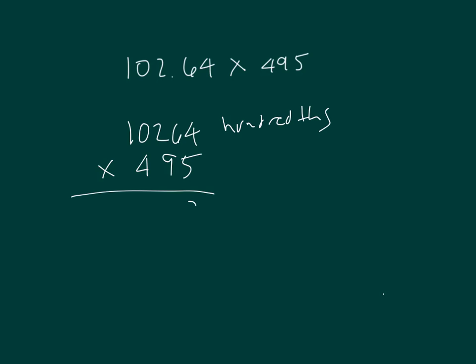5 times 4 is 20, 0, regroup of 2. 5 times 6 is 30, plus 2 is 32, 2, regroup of 3. 5 times 2 is 10, plus 3 is 13, 3, regroup of 1. 1, 5. Place a 0. 9 times 4 is 36, 6, regroup of 3.